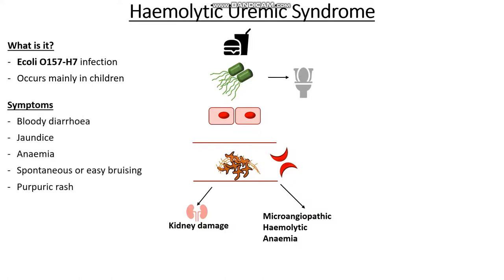So what kind of symptoms are we going to see? Well the symptoms are mainly going to be exactly that of thrombocytopenia — things like spontaneous bruising, purpuric rashes, symptoms of anemia, and jaundice from the fact that we're getting hemolysis. But the differentiating factor here is that it's preceded by this bloody diarrhoea because we have eaten the E. coli toxin.